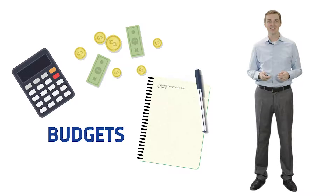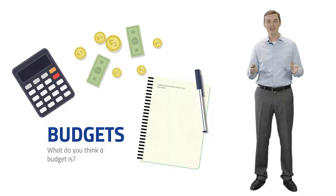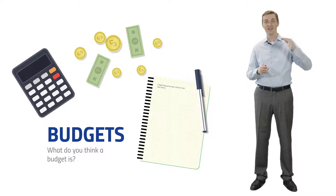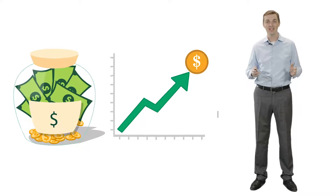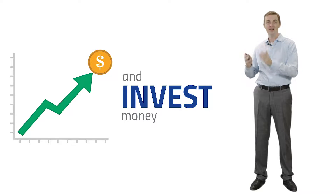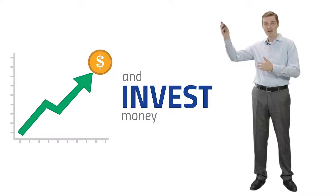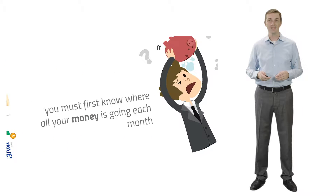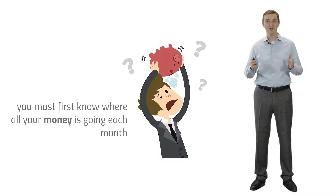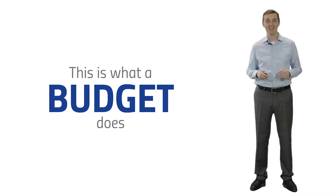So what is a budget? A budget is a simple plan that maps our expenses and our income every month. Why is it important to save money? Because we can only invest money, compound money, and create wealth in the future if we know how to save it. So you must first know where all of your money is going every month, and that is what a budget does.